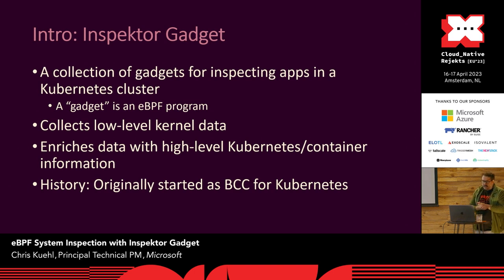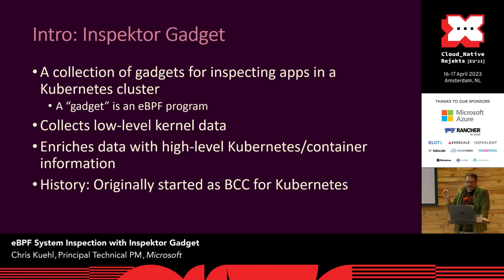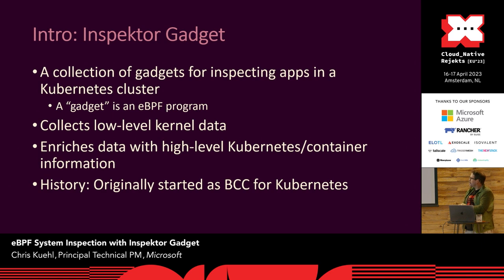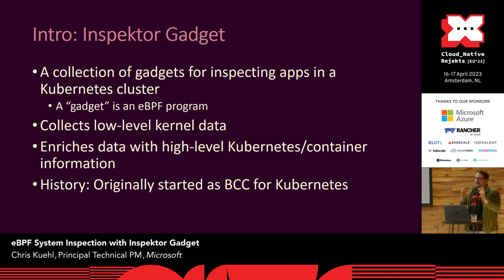Inspector Gadget — we call the BPF programs 'gadgets,' and you load different gadgets and use them with Inspector Gadget. It collects low-level kernel data and enriches it: when you get information from the Linux kernel, it gives it from the kernel's perspective, and the Linux kernel does not know about containers or Kubernetes. Inspector Gadget enriches that data by mapping these higher-level concepts. We saw Brendan Gregg's BCC project from Netflix — a large collection of eBPF programs — and thought it would be great to have in Kubernetes with that mapping.